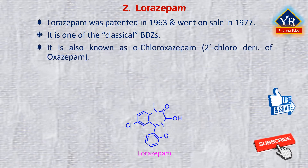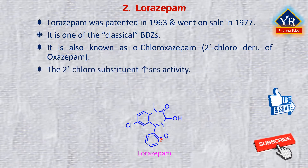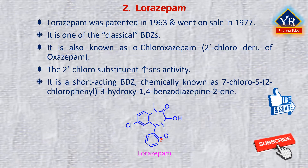Lorazepam is also known as orthochlorooxazepam, meaning it is the 2-chloro derivative of oxazepam. With respect to structure-activity relationship, the 2-chloro substituent on the 5-phenyl group increases activity. It is a short-acting benzodiazepine, chemically known as 7-chloro-5-(2-chlorophenyl)-3-hydroxy-1,4-benzodiazepine-2-one.